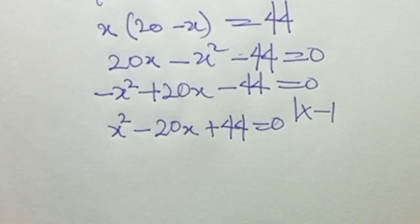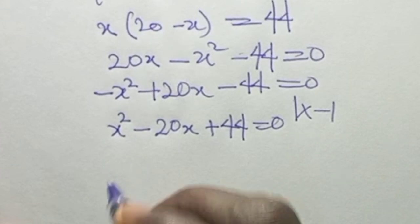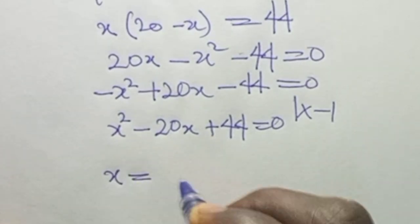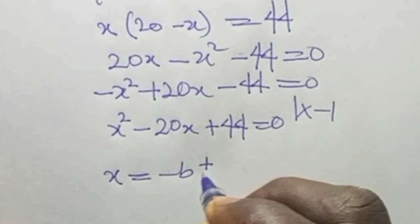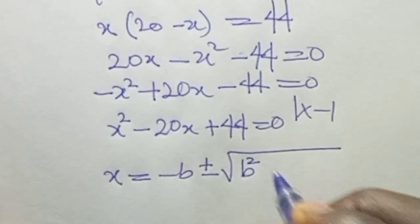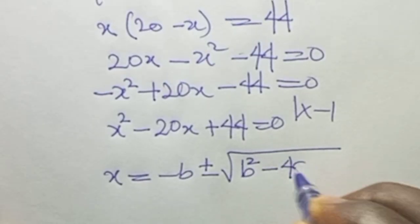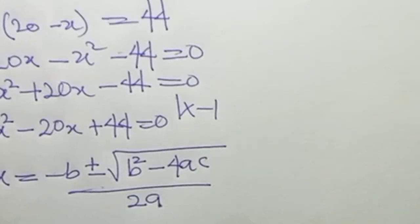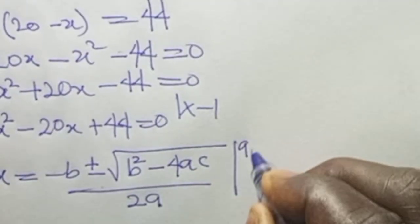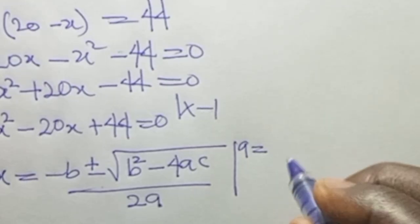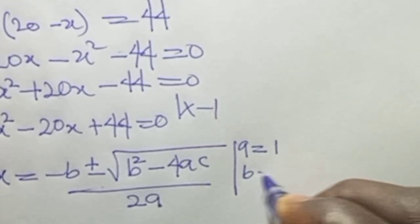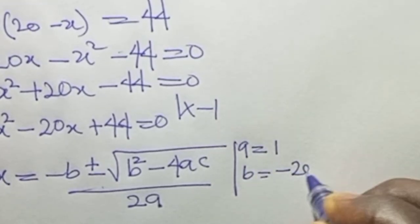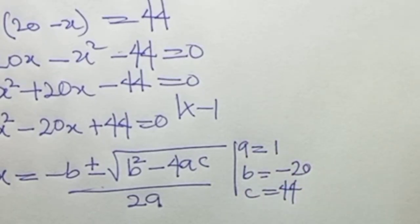This is a typical quadratic equation, solvable using the quadratic formula: s equals minus b plus or minus square root of b squared minus 4ac, all over 2a. For our equation, a equals 1, b equals minus 20, and c equals 44.